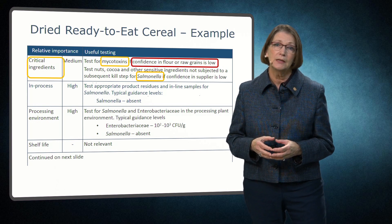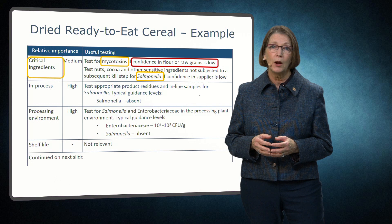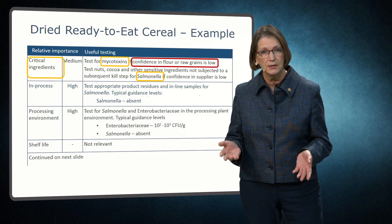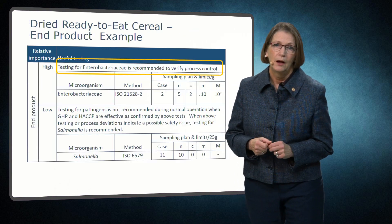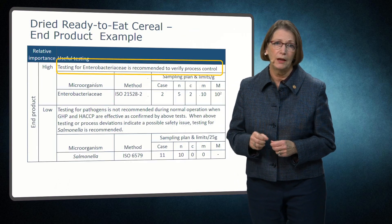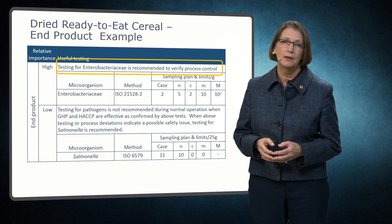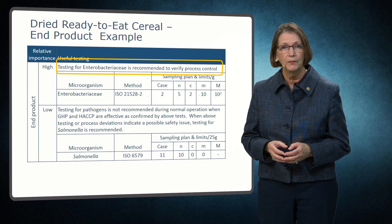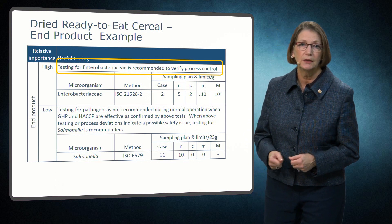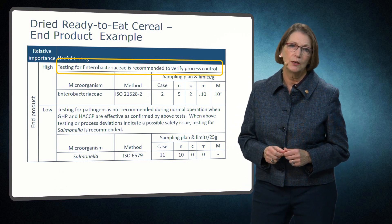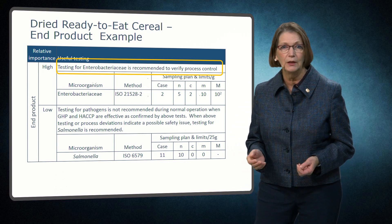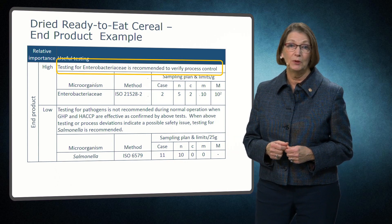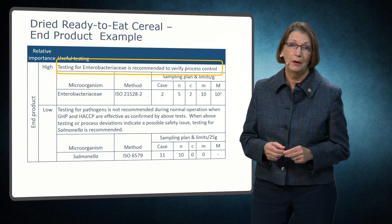In-process and environmental testing are highly recommended for cereal products to verify that the process and operating conditions are implemented as intended. End-product testing for indicators is recommended to allow for trend analysis of process control and the potential for recontamination. The utility of doing this testing is maximized when results are compared between-lots in a factory. However, at port of entry or for an incoming ingredient, this is typically available on a lot-by-lot basis.